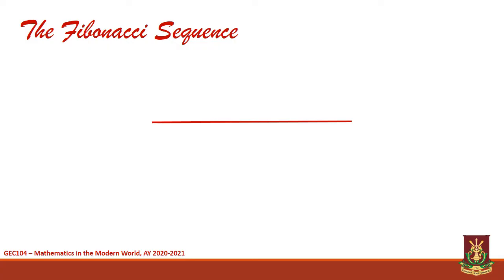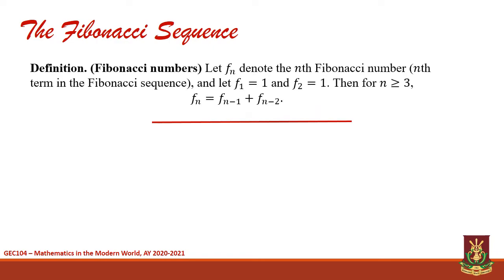For brevity, we will refer to the terms of the Fibonacci sequence as Fibonacci numbers. Now, based on the previous illustration, we may establish a recursive definition for the Fibonacci numbers as follows. We let Fn denote the nth Fibonacci number and let the first two terms be both equal to 1. Then, for n greater than or equal to 3, Fn is equal to the sum of Fn-1 and Fn-2.